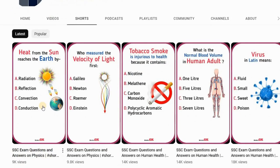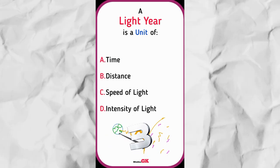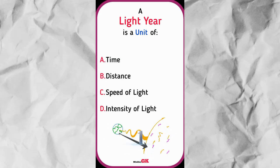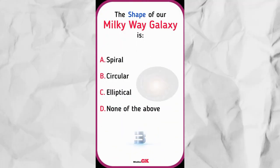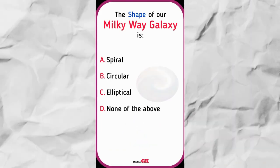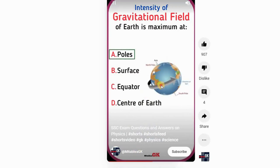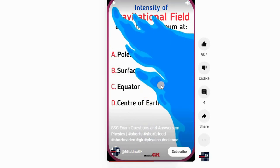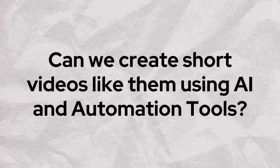If you watch one of their videos, you will see a simple way they create YouTube shorts. A light year is a unit of distance, the shape of our Milky Way galaxy is spiral. They use simple text, simple animation, short timers, and their own voiceovers to create YouTube shorts quickly. The question is: can we create similar short videos in bulk using AI tools and automation tools?